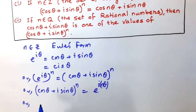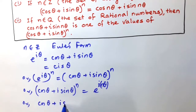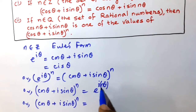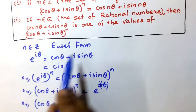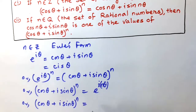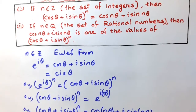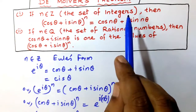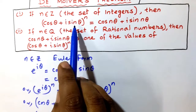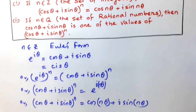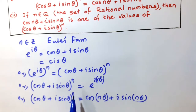Again using Euler's form on the right side, e to the power i·nθ gives cos nθ + i sin nθ. So we have shown that (cos θ + i sin θ)ⁿ = cos nθ + i sin nθ. This completes the proof of De Moivre's theorem for integer n.